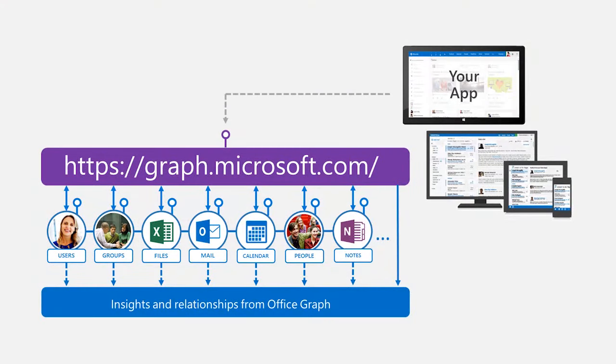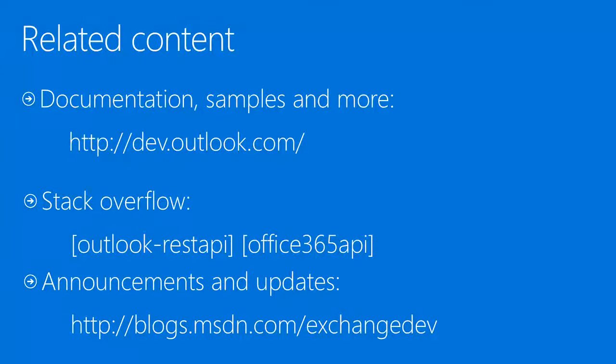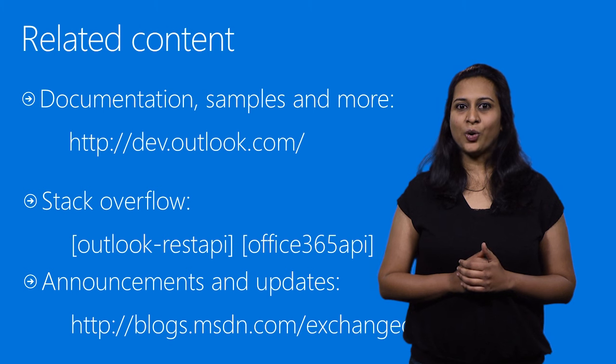Most of the Outlook features are also available at the Microsoft Graph endpoint. Our dev.outlook.com site has a lot of interesting related video content, detailed information, and quick-start tutorials. If you have any questions about the API, you can post them on Stack Overflow with the tags shown here. Our team posts new features, updates, and any breaking changes in the beta endpoint to the Outlook dev blog — subscribe to make sure you don't miss any announcements. Thank you for watching and happy coding.